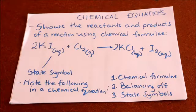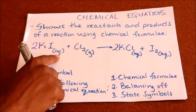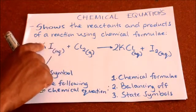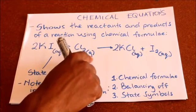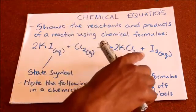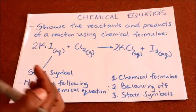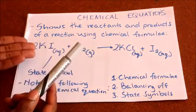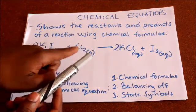It can either be a solid, a liquid, gas, or aqueous. For aqueous we write (aq) to say it has been dissolved in water. For gas we write small (g), for liquid we write small (l), and for solids we write small (s). For example, potassium iodide dissolved in water is aqueous, and it is reacting with chlorine.